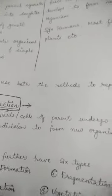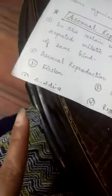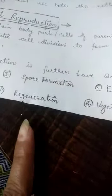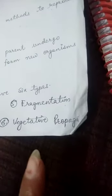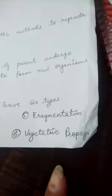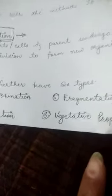Next we will discuss the types of asexual reproduction. Students, asexual reproduction has six types. First one is fission. Second one is budding. Third one is spore formation. Fourth one is regeneration. Fifth one is fragmentation. And sixth one is vegetative propagation. Next class we will discuss one by one, with examples, what each type of asexual reproduction means.